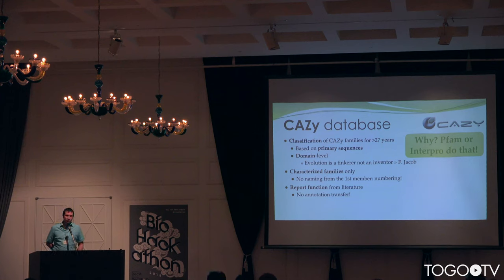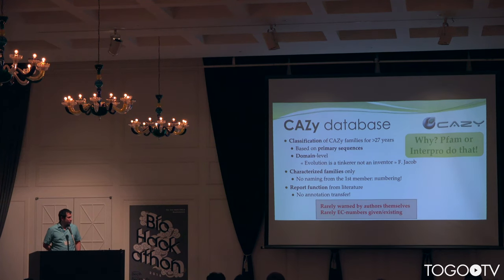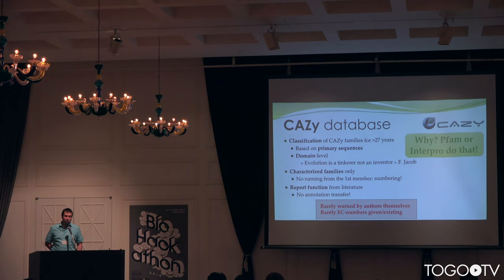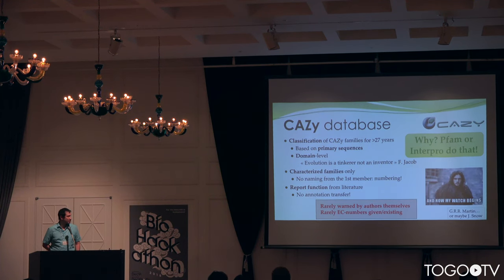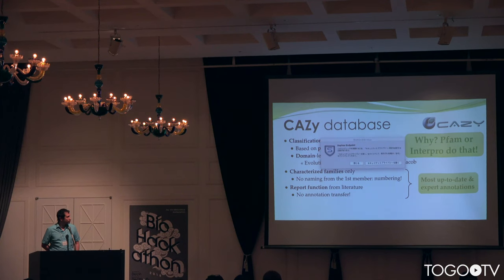We don't want to transfer any annotation, even at 99% identity. We just want to report what is in the literature. And this is a pretty hard task because we are rarely warned by the people that publish papers, despite being in the scientific community for a long time. These CAZy numbers are not present in the papers and sometimes they are not existing at all. So this is a long watch and a hard task.